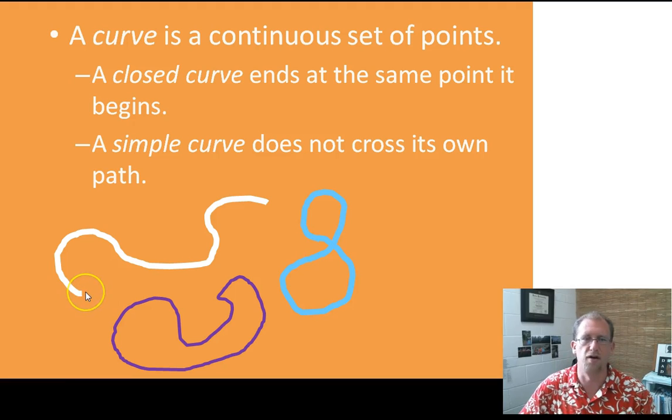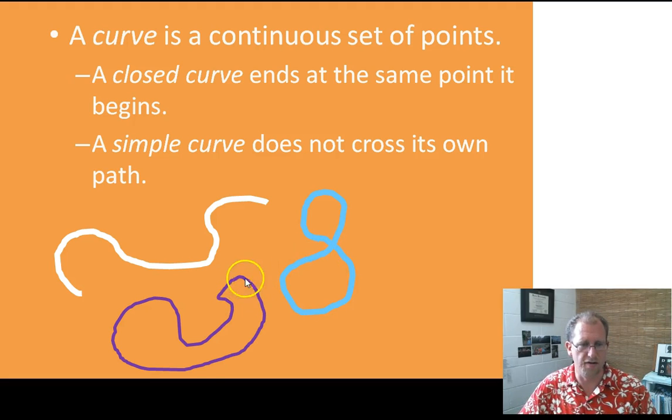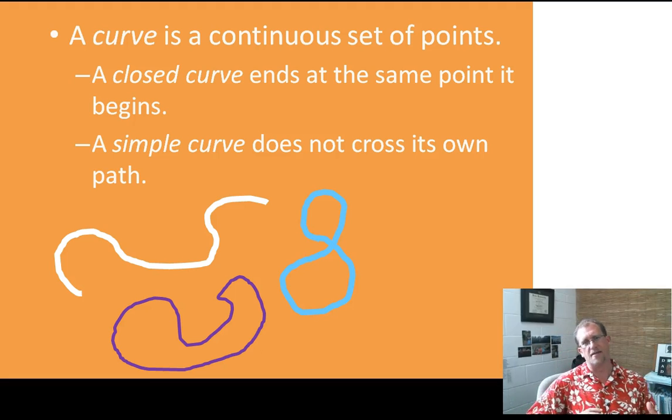So this curve here does not start and end at the same point. See, it ends over here and it starts over here. Not closed. But the other two are closed. If I were to start here and draw my figure eight, right, I end where I started. That's a closed curve. This one, if I start here and draw my little squishy embryo outline, then this is also a closed curve because I start and end at the same point. So closed curves start and end at the same point, and they're going to be the fundamental idea underneath the concept of a polygon.